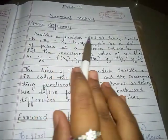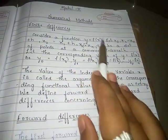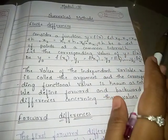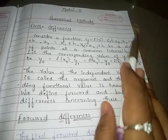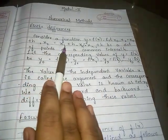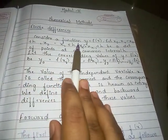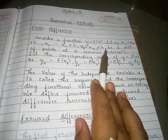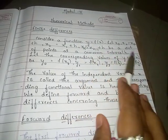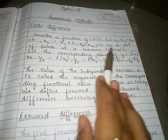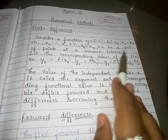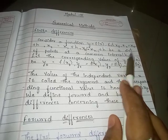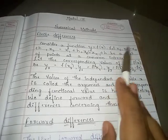Consider a function y = f(x) where x values are x0, x1, x2, x3 and so on to xn, where x1 = x0 + h, x2 = x1 + h, and so on to xn = xn-1 + h. These are a set of points at a common interval h, meaning the value of h is fixed for all these values of x.